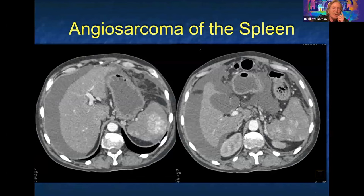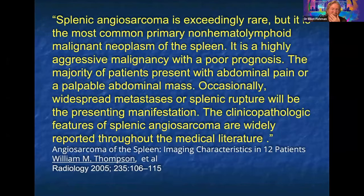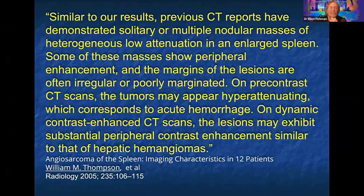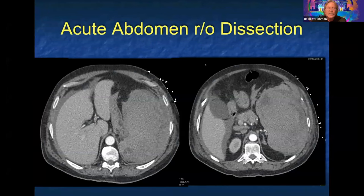Someone suggested angiosarcoma — very good. Believe it or not, we've had three cases of angiosarcoma in the last four or five months; they're exceedingly rare. They can cause splenic rupture. There's one article with 12 cases in Radiology. The lesions may exhibit substantial enhancement and you can think about hemangioma, but the pattern doesn't really look like hemangioma — hemangiomas are better defined.